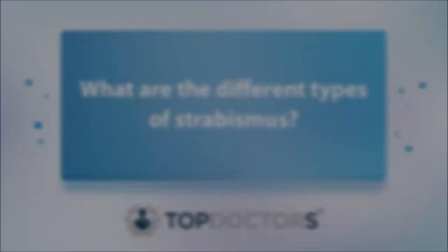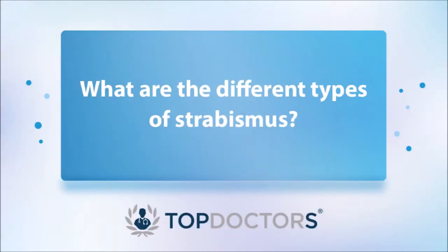Strabismus is also colloquially known as squint, and all it means is that the eyes, either looking straight ahead or in a particular direction, are not pointing in the same direction. Strabismus is a catch-all phrase, and we think of it in various ways. Often children have a strabismus, and that's quite commonly associated with being long-sighted.